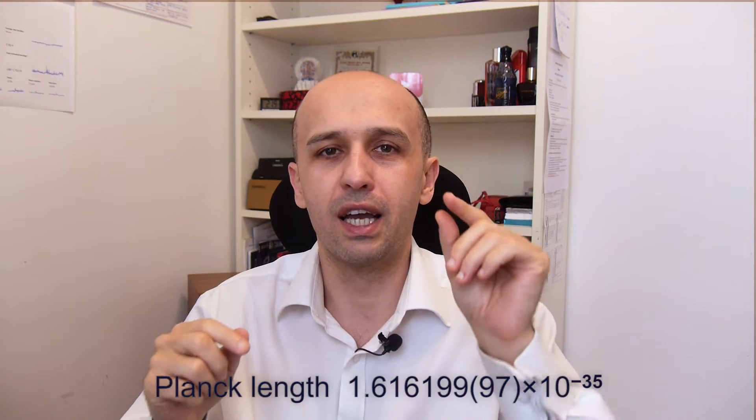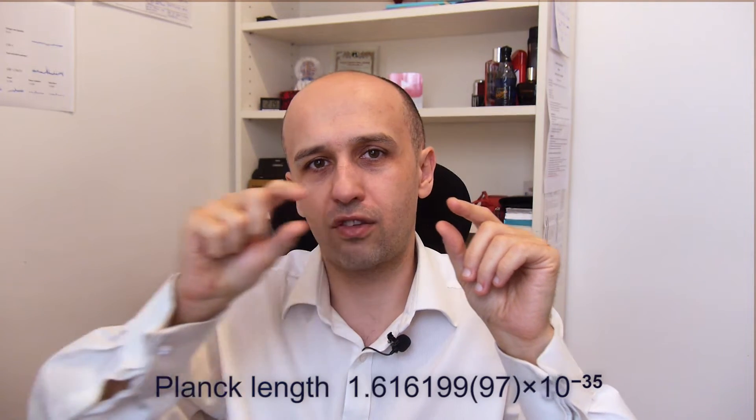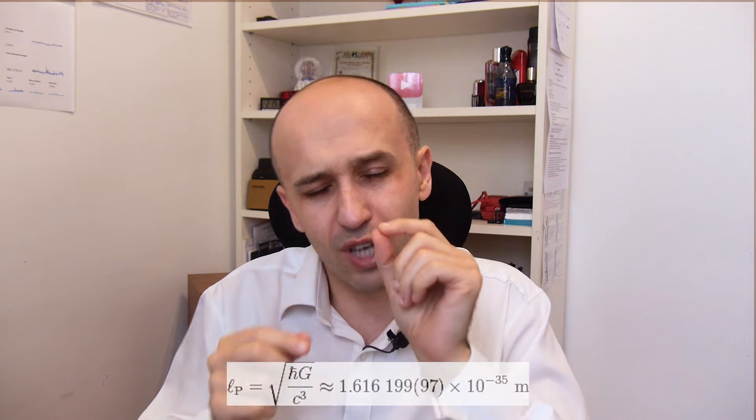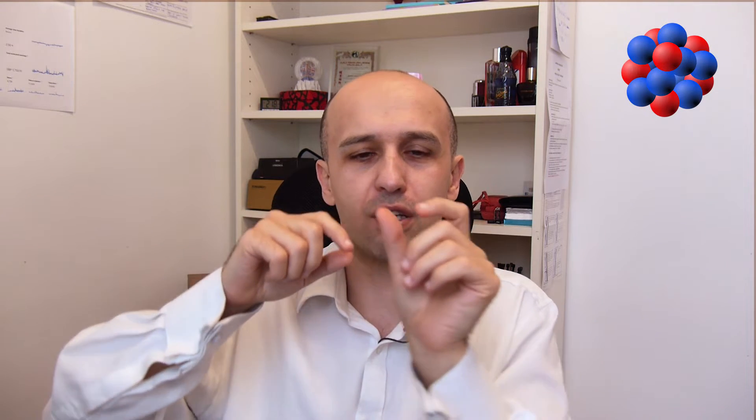So first of all, our world is digital. What does that mean? It means there is a minimum length that exists, called the Planck length. It's a ridiculously small length — roughly 1.6 times 10 to the minus 35. So if you take zero, put a dot, then 34 zeros and a one at the end, and multiply that by 1.6 of a meter — you get something so tiny that even a proton's diameter needs to be multiplied by 10 to the minus 20 to get the Planck length. This is the smallest length anything can travel.